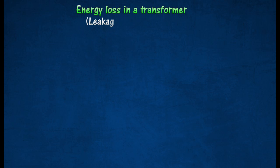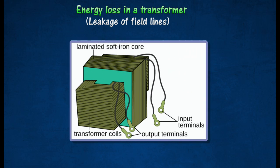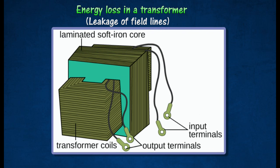The field lines produced by the primary coil may not fully cut the secondary coil, especially if the core has an air gap or is badly designed, which contributes to the energy loss in a transformer.